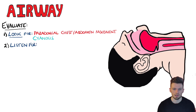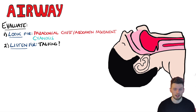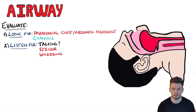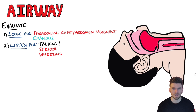You can also listen for sounds. For example, if the patient is talking, that's a fairly conclusive sign that the airway isn't obstructed. However, if you hear sounds like stridor — which is a high-pitched sound, mostly on inspiration — or even a wheeze, these sounds are indicative of a partial obstruction.